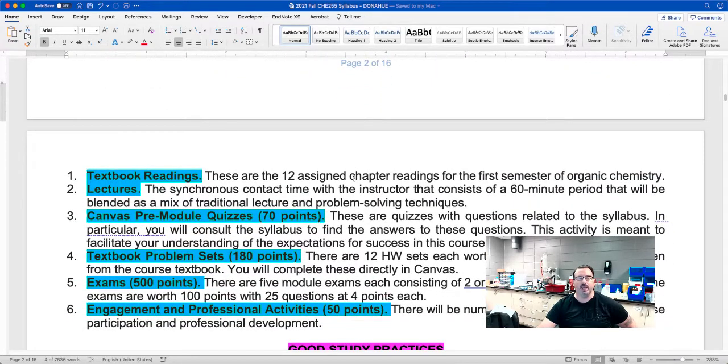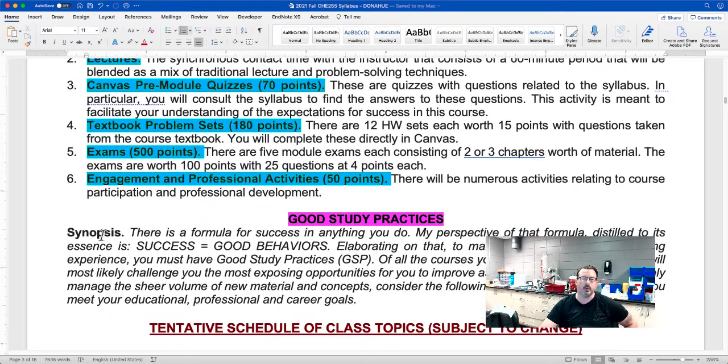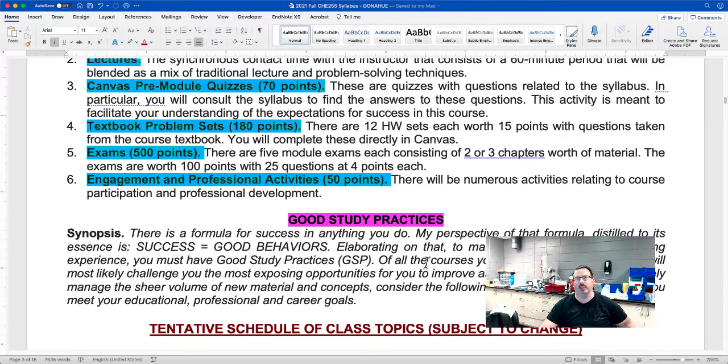So what are the learning activities? There are six listed here. There are textbook readings. This is pretty much on your own. You need to read the textbook to be successful. You need to attend lecture. You'll need to do Canvas pre-module quizzes. These are basically questions related to the syllabus so that you understand what the syllabus content is for each module. You'll do textbook problems. These will be practice basically for the exams. You'll do the exams. And then there'll be different activities for engagement and professional development. So good study practices. This basically boils down to you need to do something for this class each and every day. So about for every one hour of contact time, that's lectures. You need to spend about two to three hours outside of lecture preparing or practicing for this course.